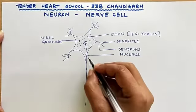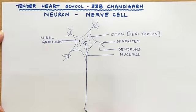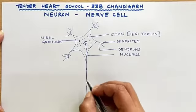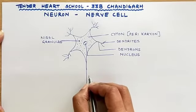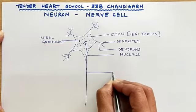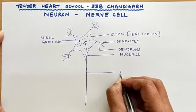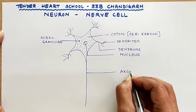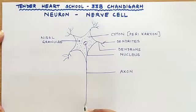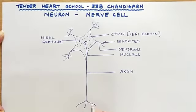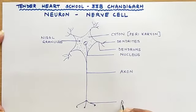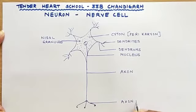Further, one of the main branches from the cytone which comes out is called the axon. And these are the axon endings.